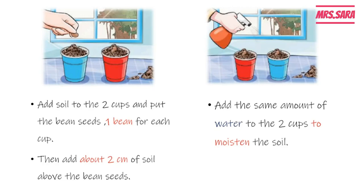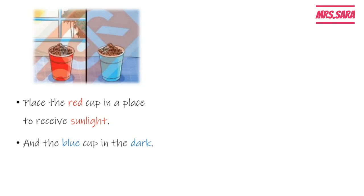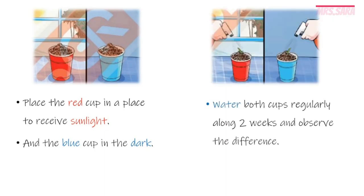Then add the same amount of water to the two cups to moisten the soil. Place the red cup in a place to receive sunlight, and the blue cup in the dark. Then water both cups regularly over two weeks, or 14 days, and observe the difference.